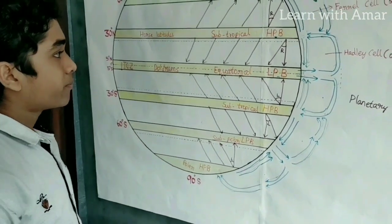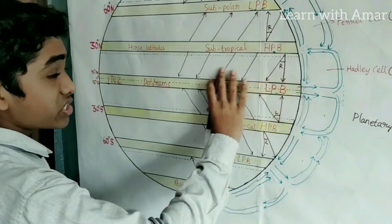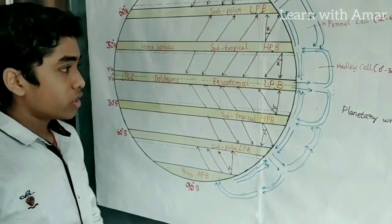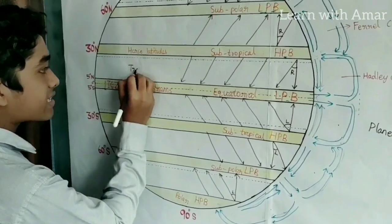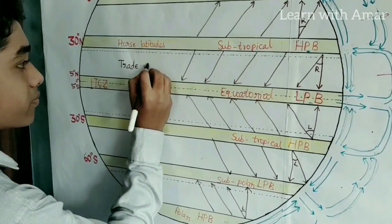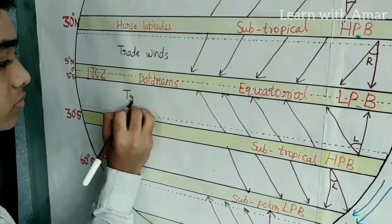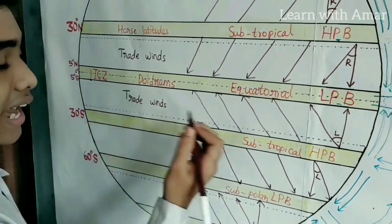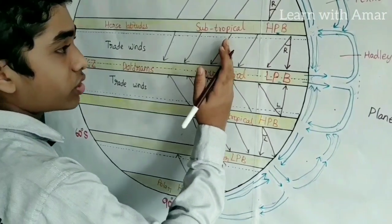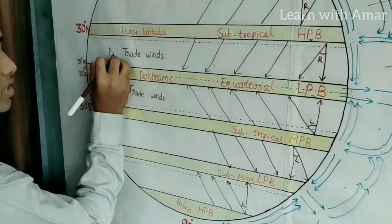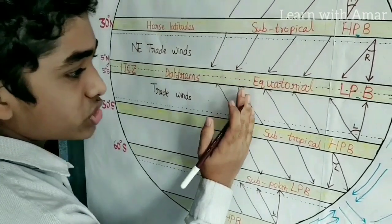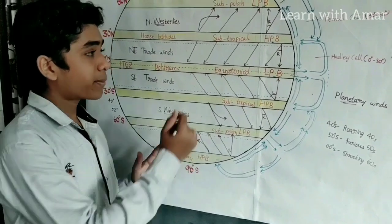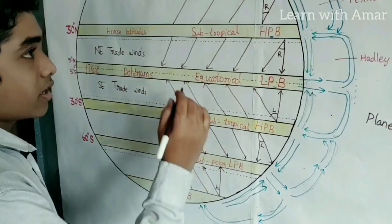Now let us name these winds. These winds helped in the sailing of the European trade ships, so they are known as trade winds. These are also named with the direction of their origin. These originate in the northeast, so they are known as northeast trade winds. While these originate in the southeast, so they are known as southeast trade winds. They blow from the subtropical high pressure belt to the equatorial low pressure belt.